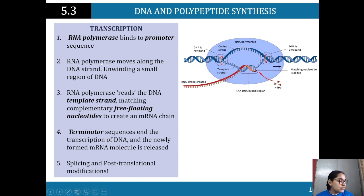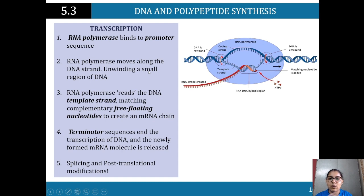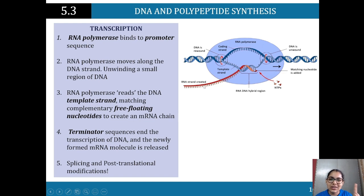RNA polymerase moves along the DNA strand, unbinding that small region of DNA that we need for polypeptide synthesis. RNA polymerase reads the DNA template strand, matching the free-floating nucleotides to create the mRNA strand. Key thing happening: thymine is replaced by uracil. The free-floating nucleotides complement and form whatever part of the DNA we need, and then the terminator sequence ends that transcription. The DNA rebinds as you can see.